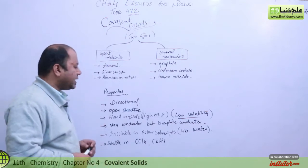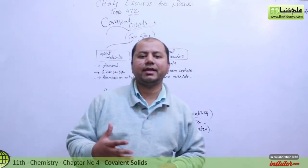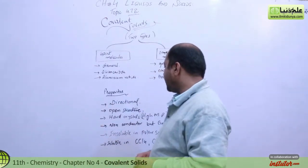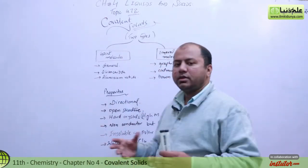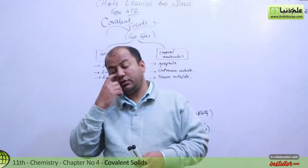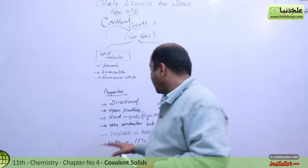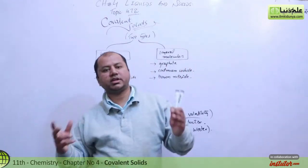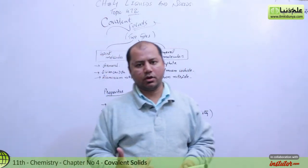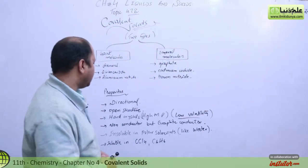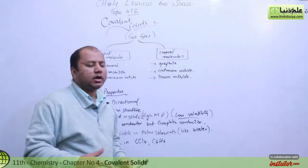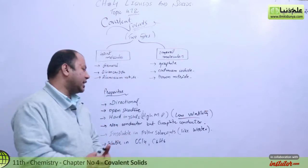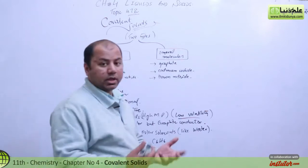Covalent solids are directional in nature — they are polar in nature and show dipole moments. They have an open structure; they don't have closed packing. They exist in a molecular form, and their structure can be 2D or 3D. This open structure is what gives us hard crystals.